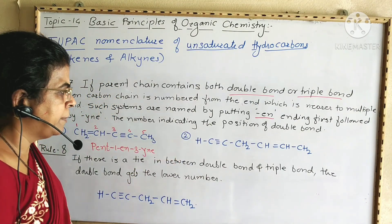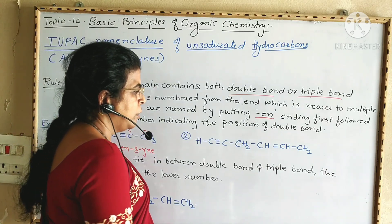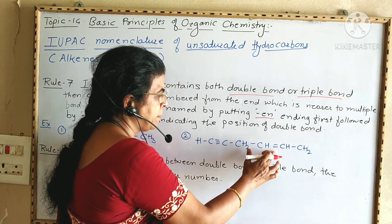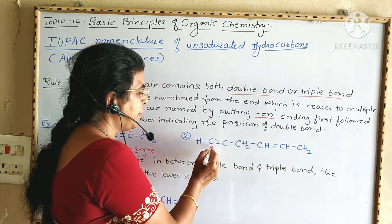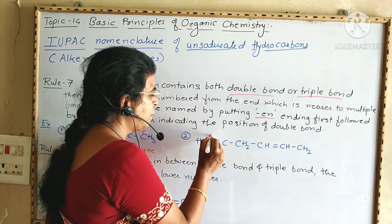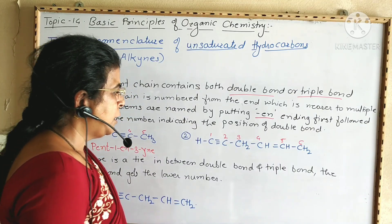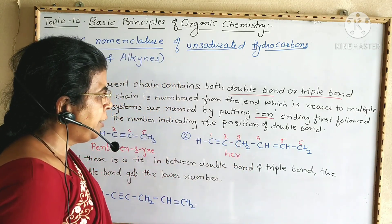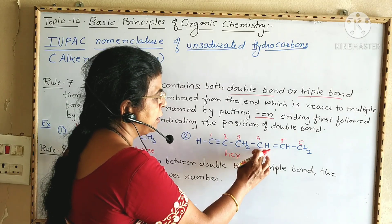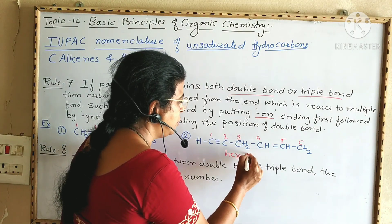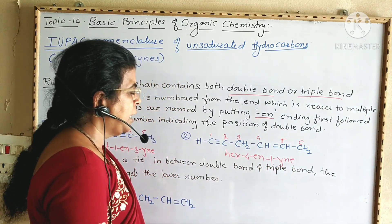In the second example for rule seven, there are both a double bond and a triple bond in a six-carbon chain. From one end the double bond is at position two; from the other end the triple bond is at position one. We number from the end nearer to the multiple bond: one, two, three, four, five, six. The double bond is at position four and the triple bond at position one, so the name is hex-4-en-1-yne.